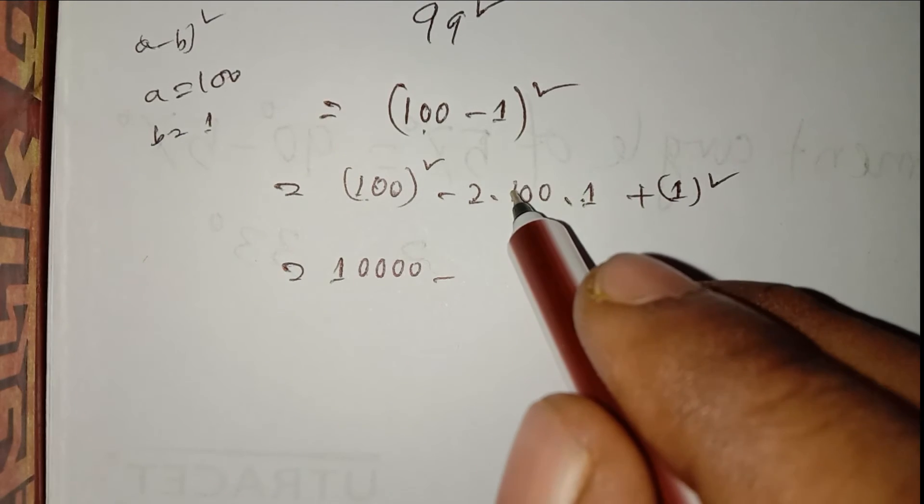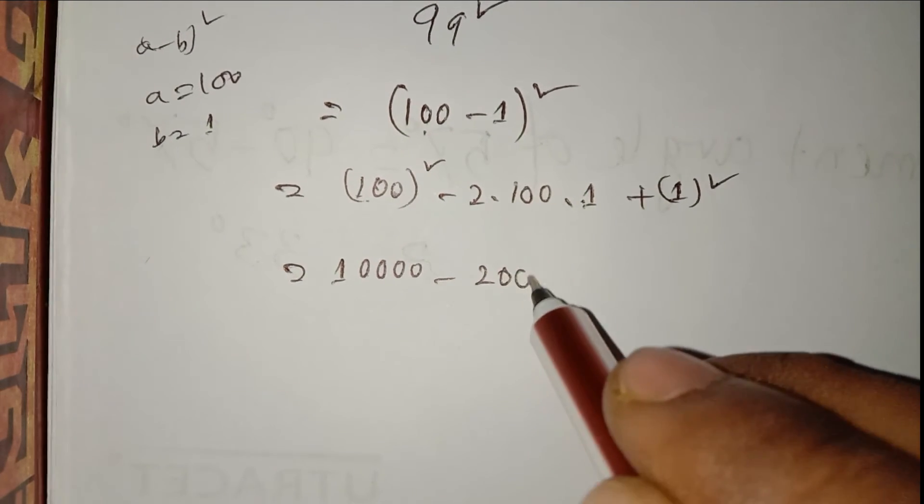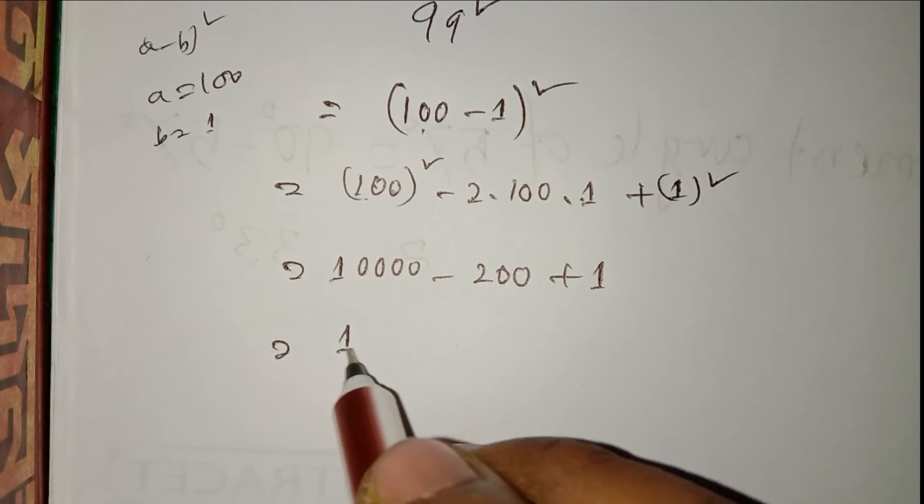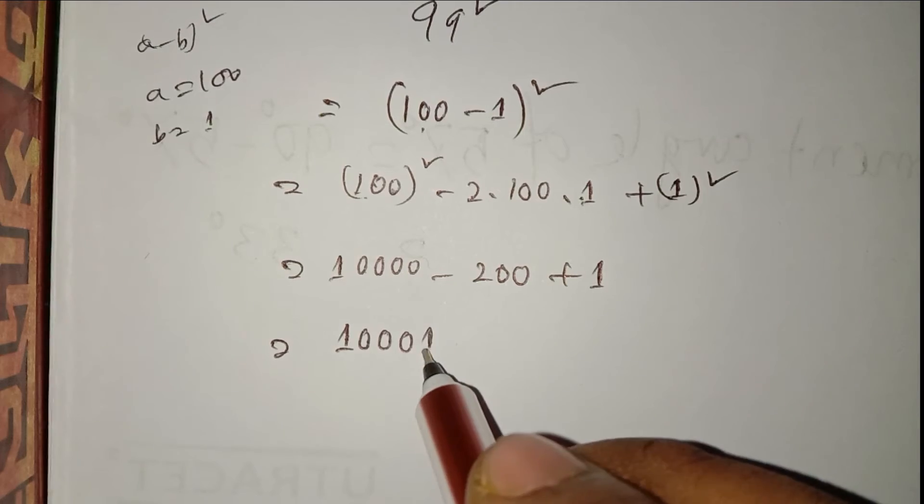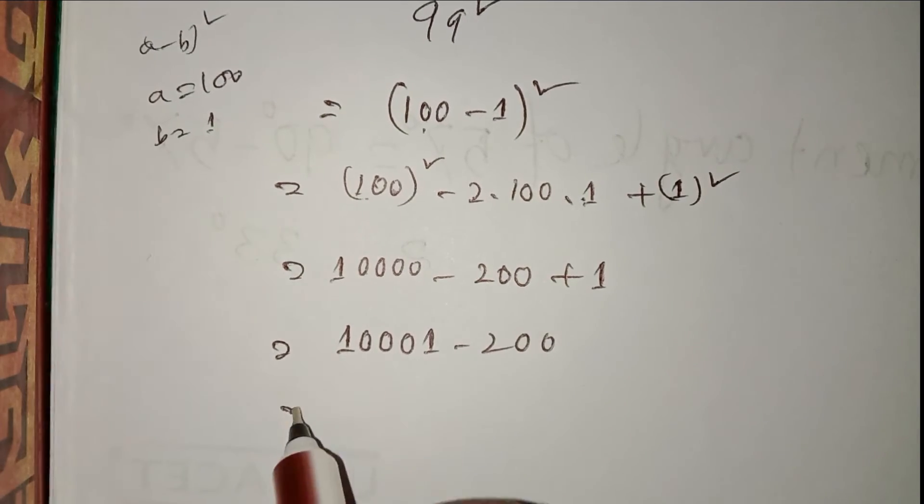Here add 10,001 minus 200, so here is 10,000 minus 200 equals 9,801.